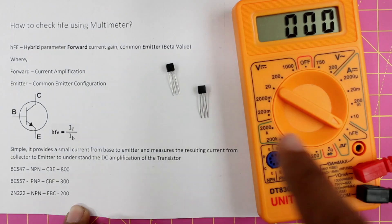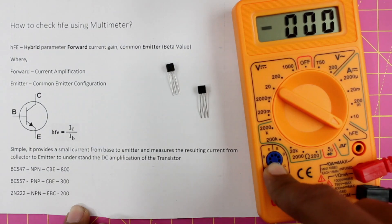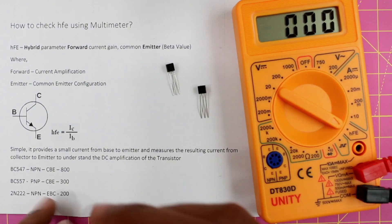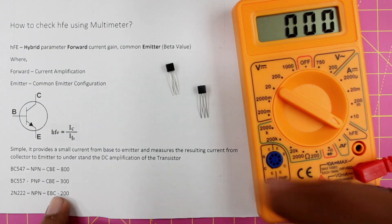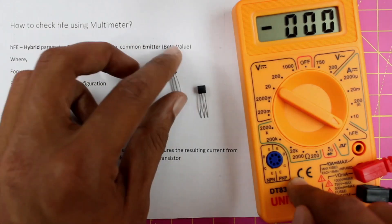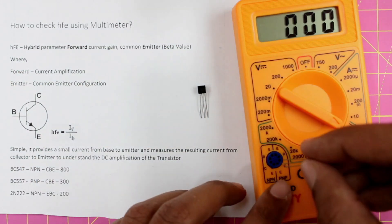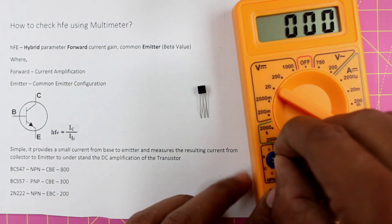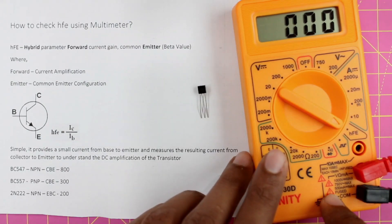Now that is it guys, this is how you can use this multimeter to check the beta value of your transistors. But apart from this, you can also use this method to figure out if your transistor is an NPN transistor or a PNP transistor. For example, if I insert the transistor in the wrong slot and within the wrong terminals, I won't get anything on the multimeter.